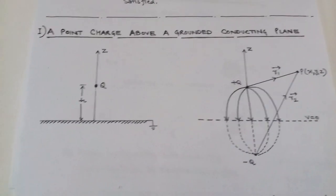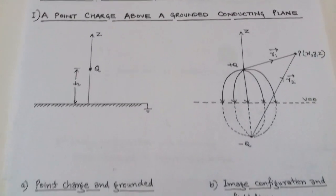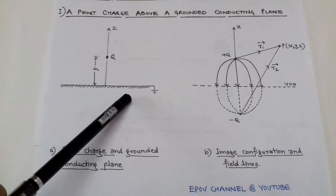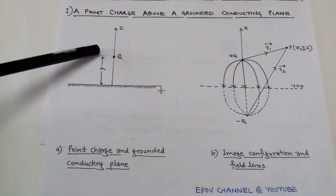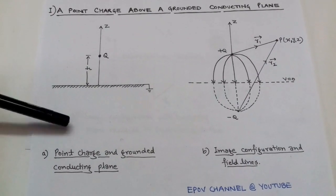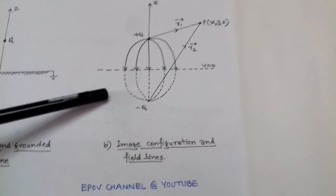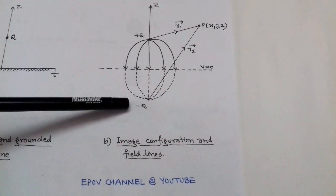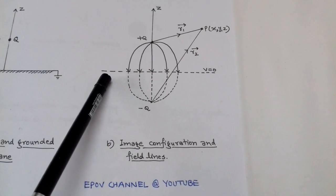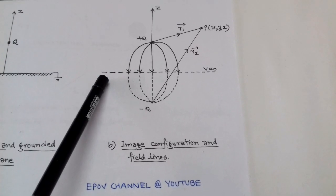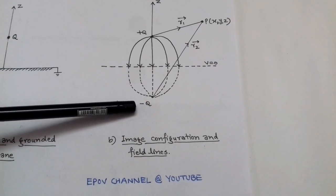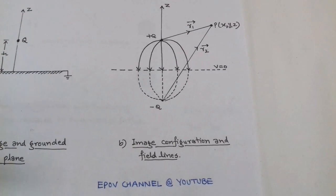We consider a point charge q situated above a perfectly conducting plane that is grounded, having potential 0. The point charge q is at height h with respect to the z-axis. After applying the method of images, the positive charge has an image of −q and the perfect conducting plane is replaced by an equipotential surface. The field lines originate from the positive charge and terminate at the negative image charge.